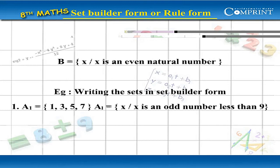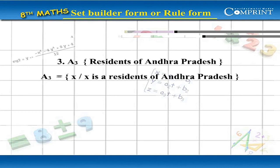A3 equals the set of residents of Andhra Pradesh. A3 equals the set of x by x is a resident of Andhra Pradesh.